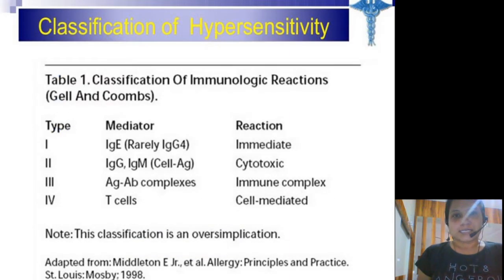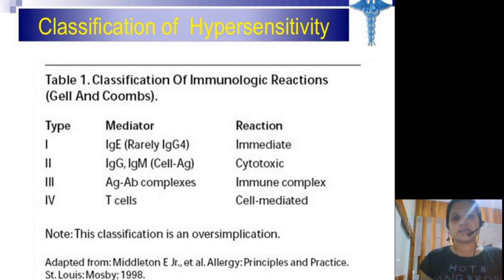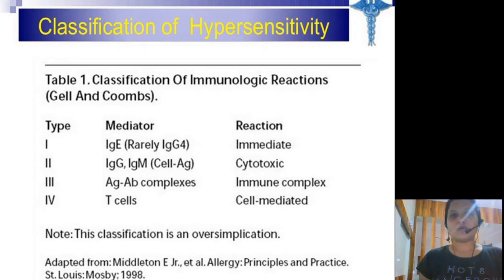These hypersensitivity types are also known by different names. Type 1 is called IgE-mediated, type 2 is IgG/IgM class-mediated, type 3 is called antigen-antibody complex or immune complex-mediated reaction, and type 4 is cell-mediated — specifically T cell-mediated hypersensitivity.